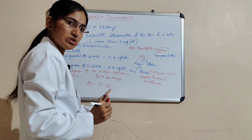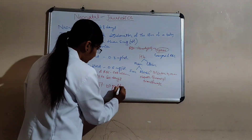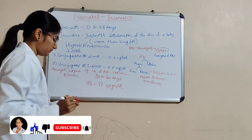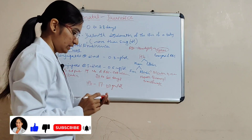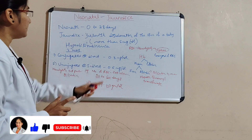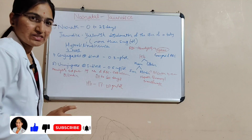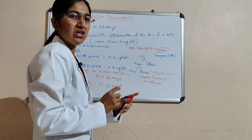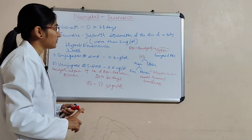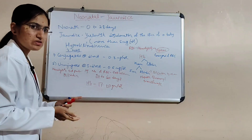The Hb of a neonate is 17 to 20 grams per dL. This is all about the jaundice — neonatal jaundice. In neonatal jaundice, there is hyperbilirubinemia.